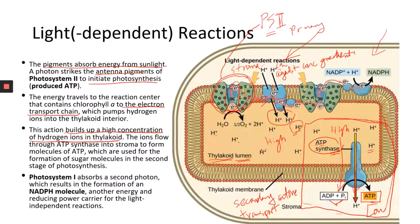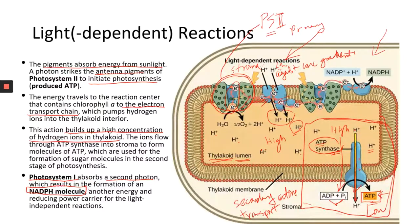Photosystem two produces ATP. Photosystem one also absorbs a photon from light and harvests light energy. What it does is make the other electron carrier — NADPH. ATP has energy, and NADPH is more like an electron carrier. It temporarily carries the electrons and eventually passes them to carbon to reduce it from inorganic carbon to the organic carbon found in glucose.